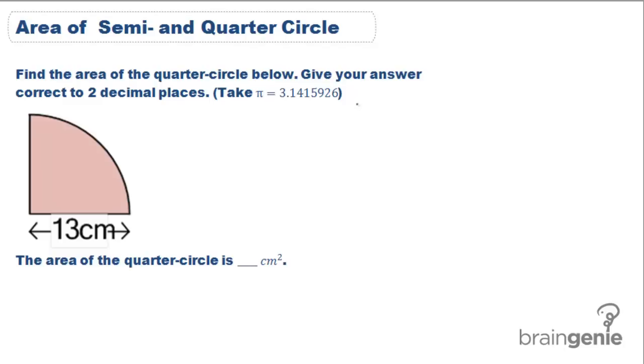So the first thing we're going to do is find the area of the entire circle. We know that area is equal to pi r squared. Here we know that r is 13 centimeters and that it wants us to use 3.1415926 as pi.